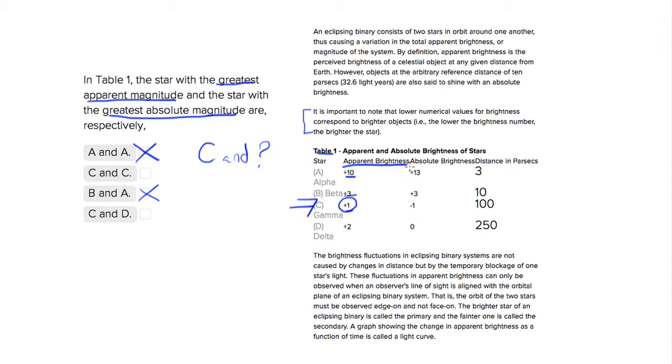It's the same principle - we want to look for the lowest number, and our lowest number is again c, negative one. Looking at our answer choices, we see c and c, which is going to be our choice, because c has the lowest number for both.